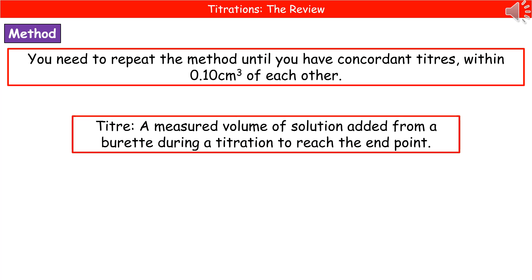Alternatively, they could give you the results of a titration and ask you to calculate the mean. When you're doing that, you're only using the concordant titers. If you've got any that are outside that 0.1 centimetres cubed, then you don't include those in calculating the mean.